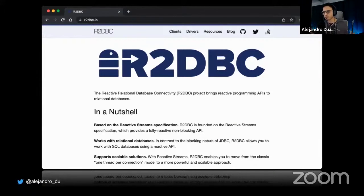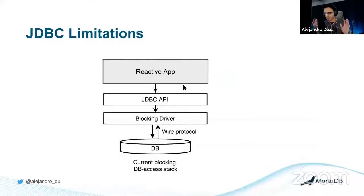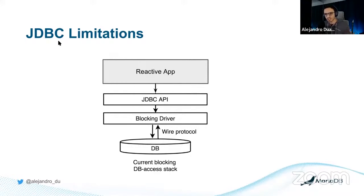So what is R2DBC? We've seen a lot of reactive things, and now there's another one — Reactive Relational Database Connectivity. It brings the reactive programming paradigm to the layer between the Java application and the database. Why is it needed? JDBC has limitations — not that it's bad, most applications use it successfully, and in many cases it could be a better option. But JDBC uses a blocking driver.